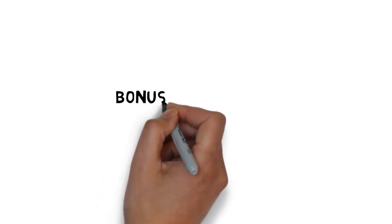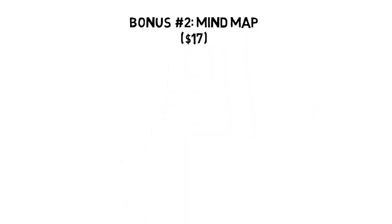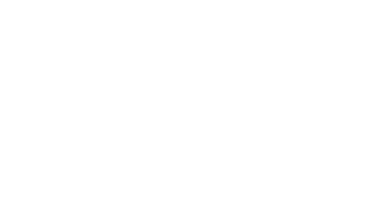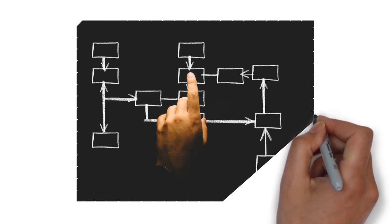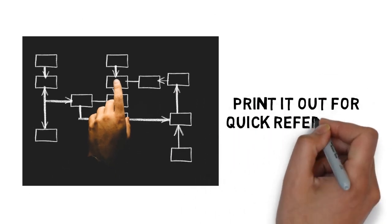Fast action bonus number two, modern affiliate marketing strategies mind map, valued at $17. Some people learn better by looking at a mind map. The mind map gives you an overview of everything covered inside the guide. You can also print it out for quick reference anytime you need it.